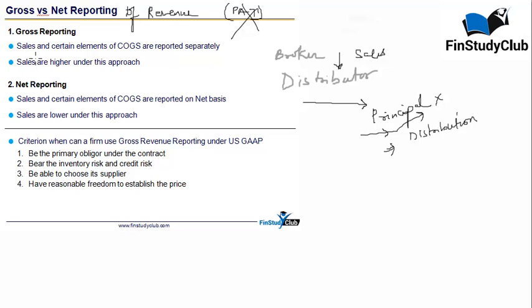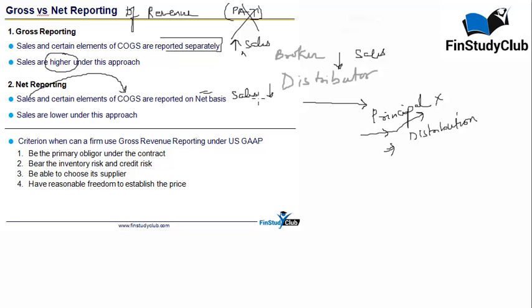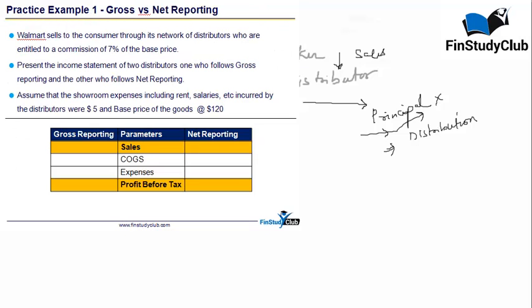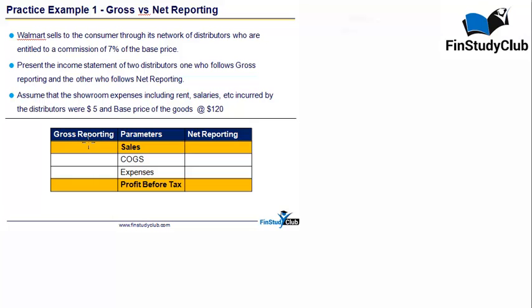There are broadly two approaches. In gross reporting, sales and COGS are reported separately, so the quantum of sales is very high. In net reporting, we net off the COGS, and therefore sales will be much lower. We have a couple of practice examples to illustrate this. The question is when can a firm use gross reporting under US GAAP.